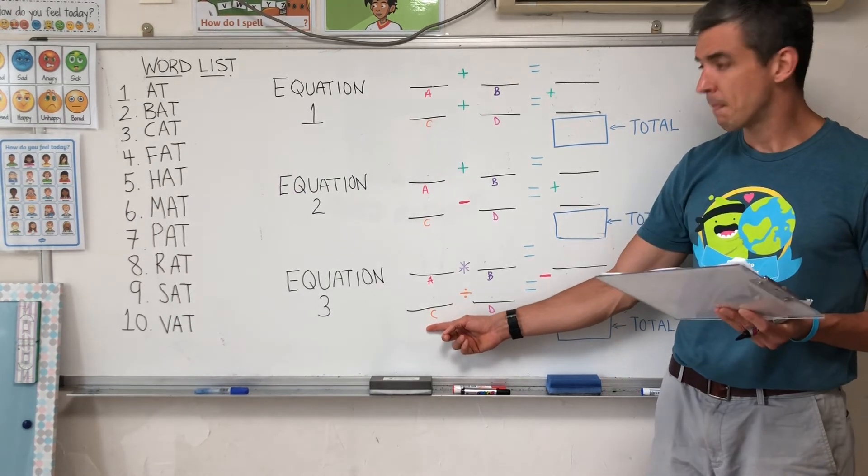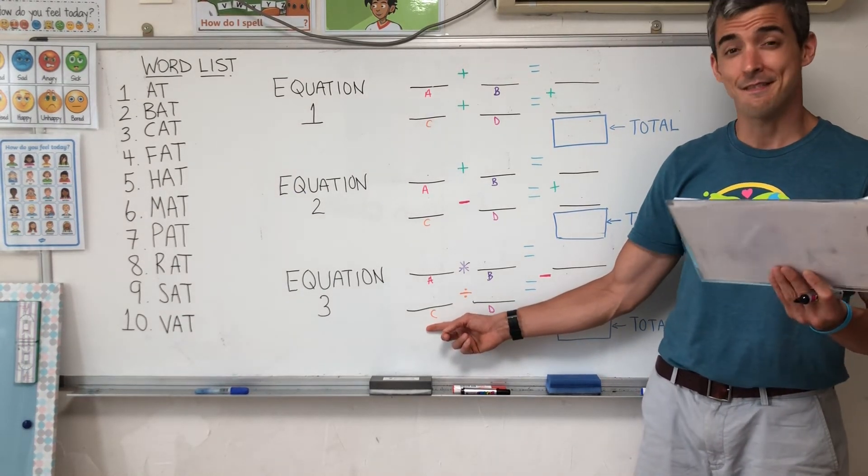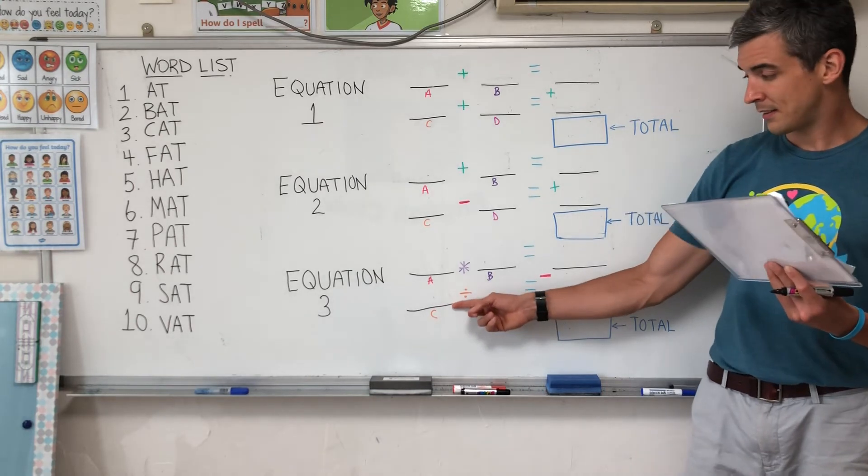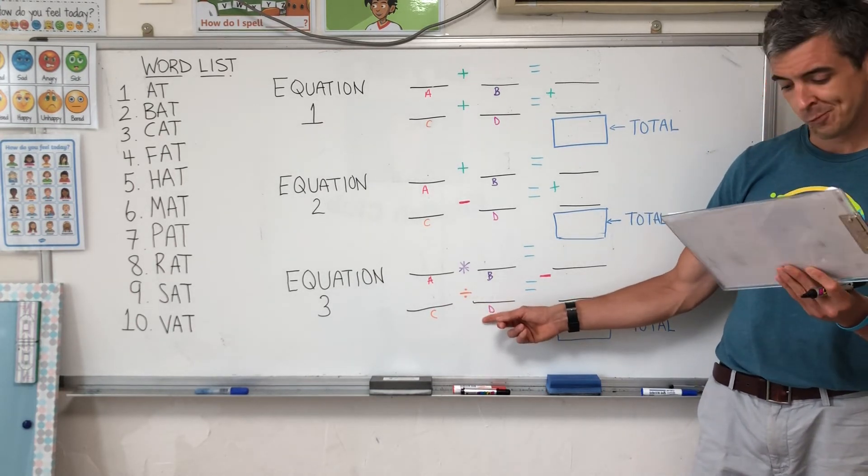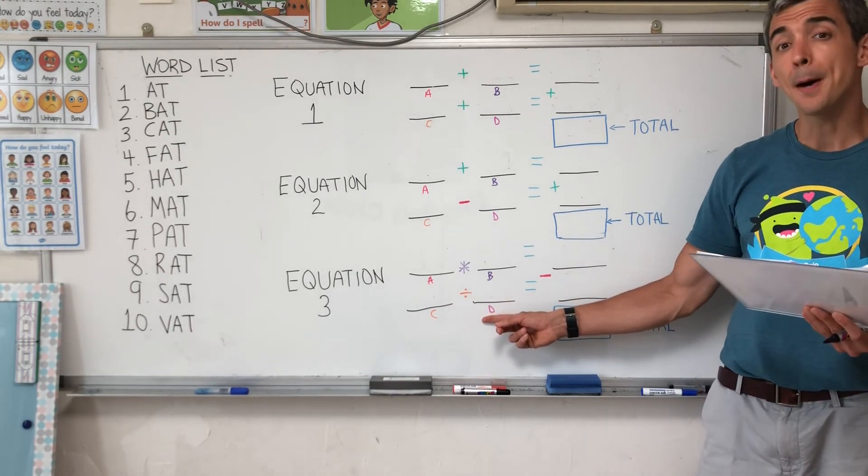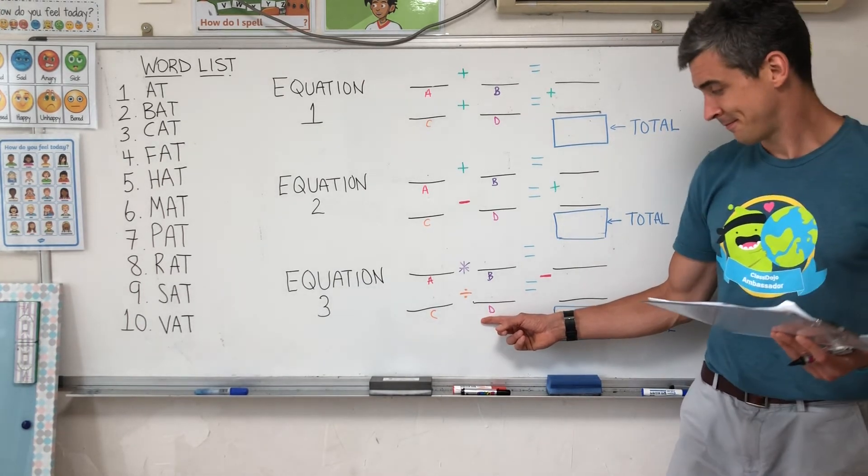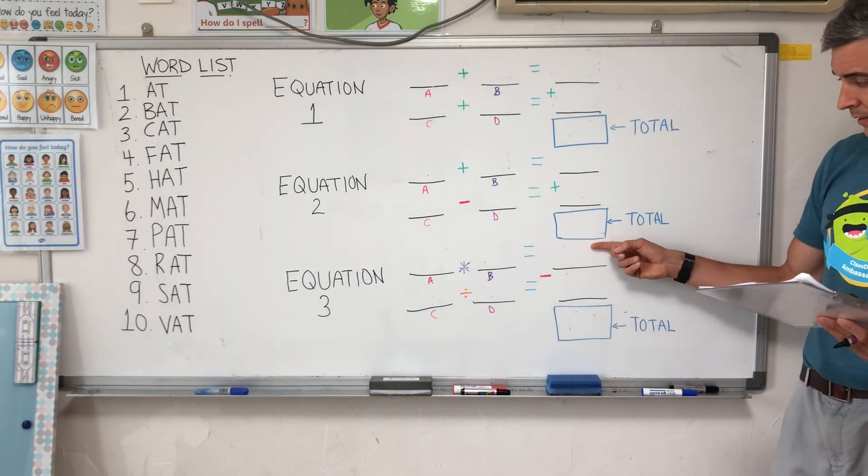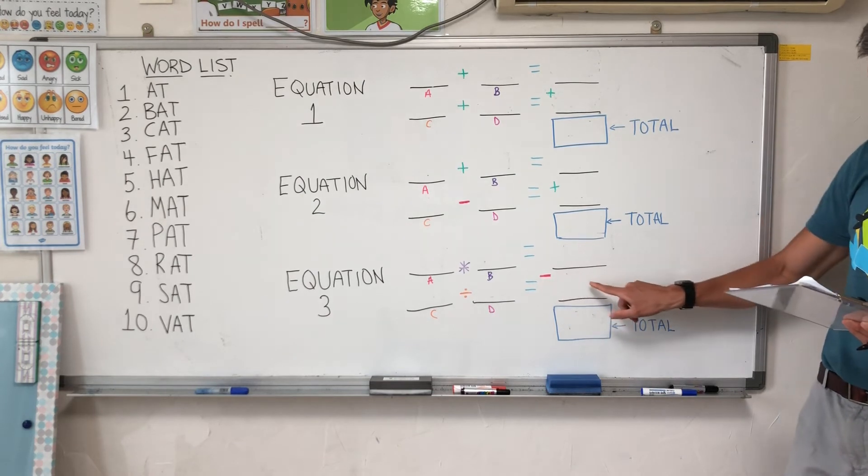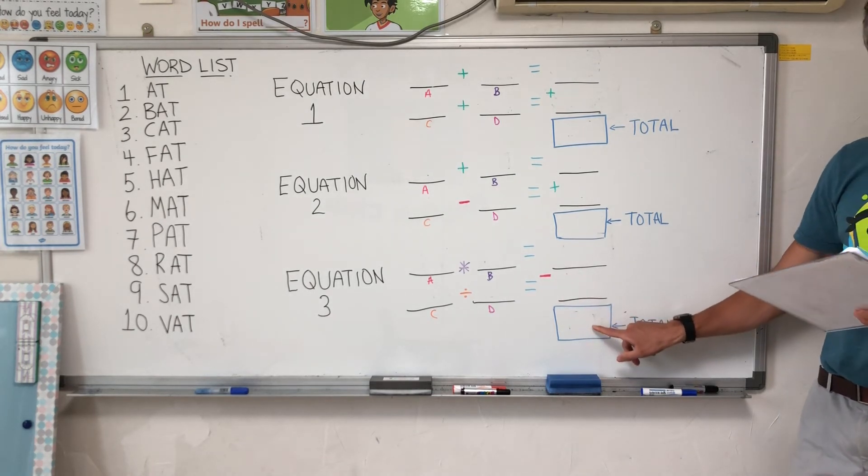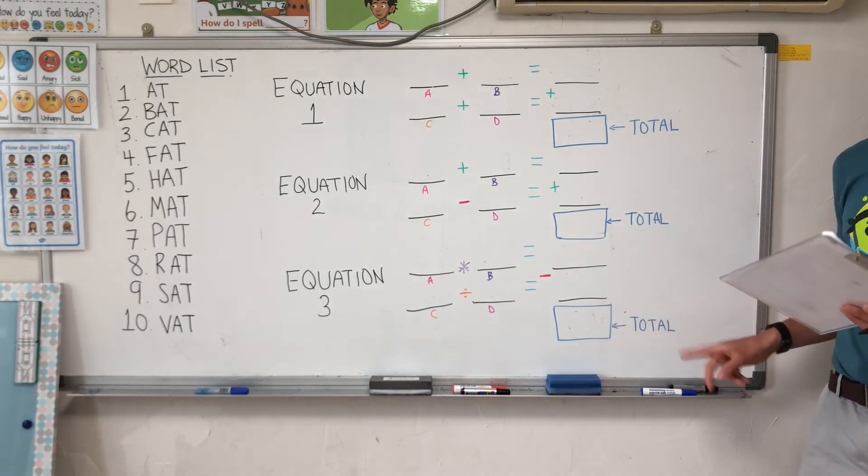Letter C. V, v, vat divided by b, b, bat. Answer minus answer. That is your total. How many?